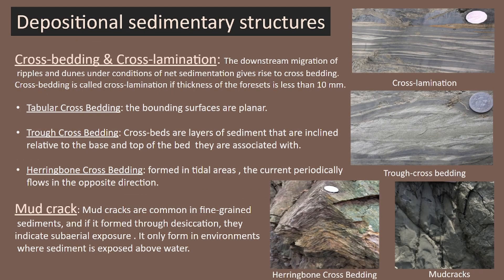Here is another example of depositional sedimentary structure which is cross bedding and cross lamination. The downstream migration of ripples and dunes under conditions of net sedimentation gives rise to cross bedding. There are three types of cross bedding: tabular cross bedding, trough cross bedding, and herringbone cross bedding.